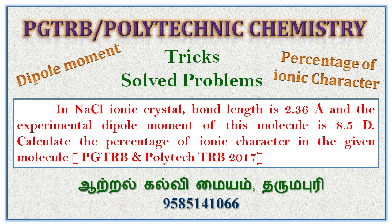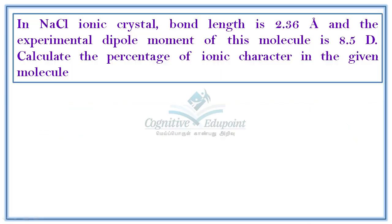Today's trick involves dipole moment applications and calculating the percentage of ionic character. The question is: in NaCl ionic crystal, the bond length is 2.36 angstroms and the experimental dipole moment of this molecule is 8.5 Debye. Calculate the ionic character in the given molecule.